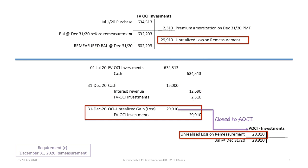The next item is to remeasure the bonds at year end. At December 31, 2020, the fair value of the bonds is determined to be $602,293 — this is given. That makes the adjustment between the balance before remeasurement ($632,203) and after simply a plug of $29,910. We credit FVOCI investments for $29,910 and debit OCI for unrealized gains and losses. This OCI account is a temporary account that is then closed to accumulated OCI. The balance in accumulated OCI for this investment will be $29,910 going forward.